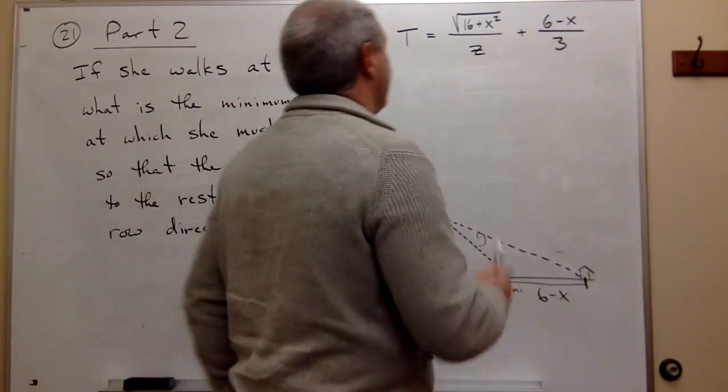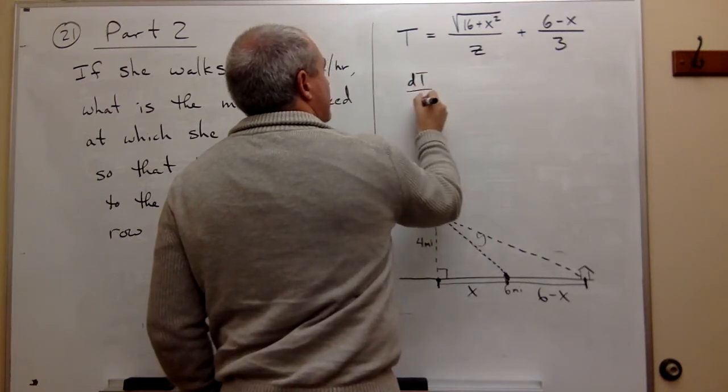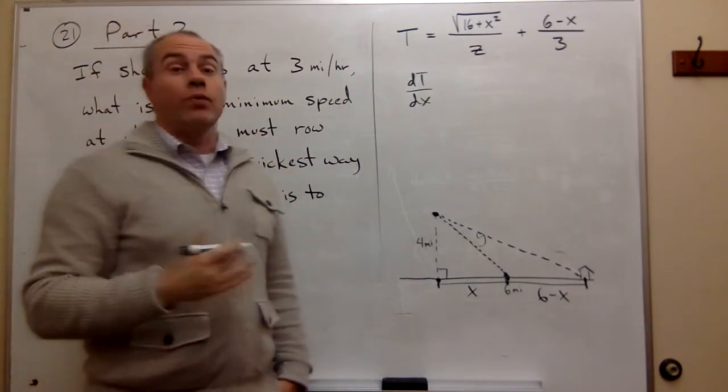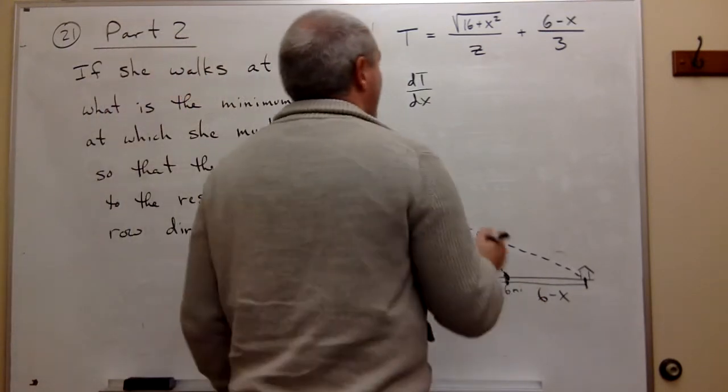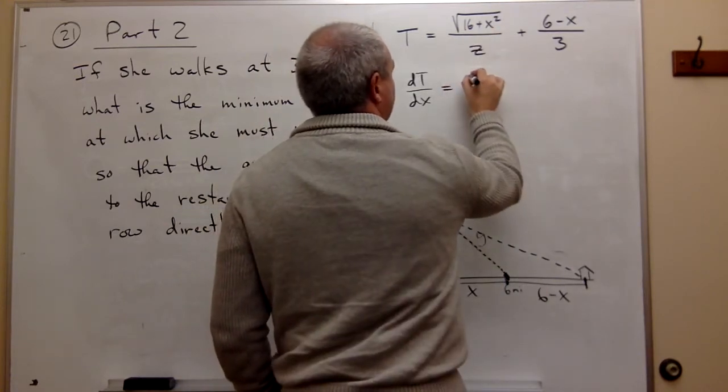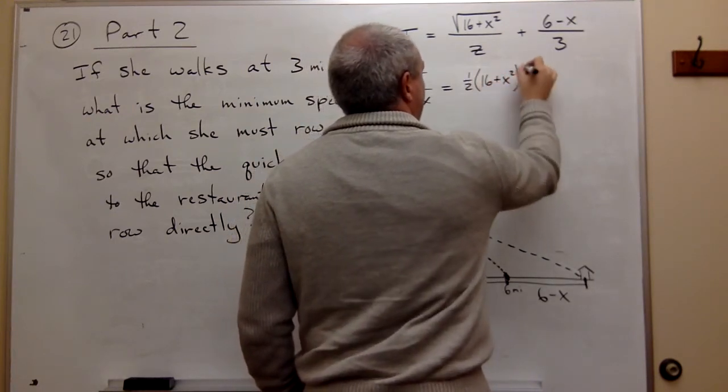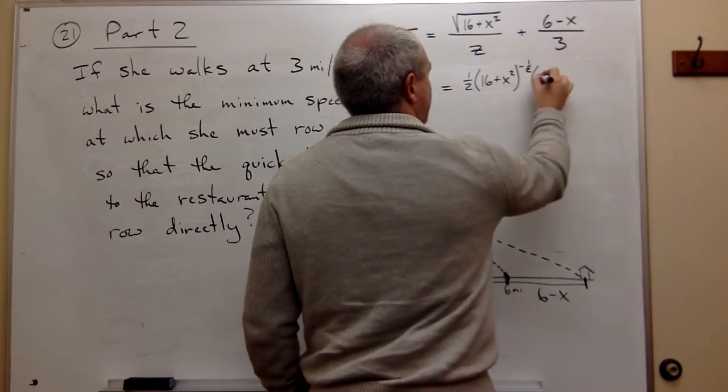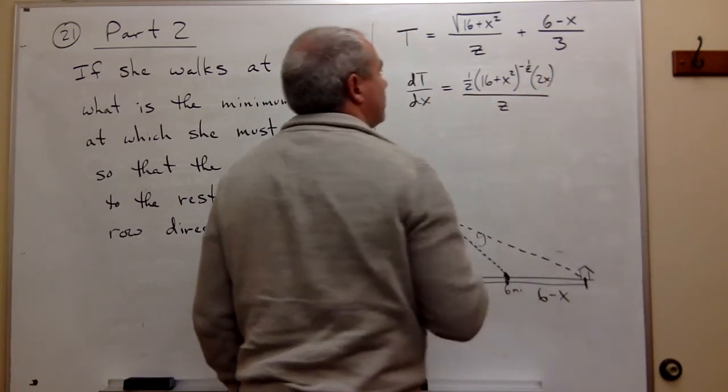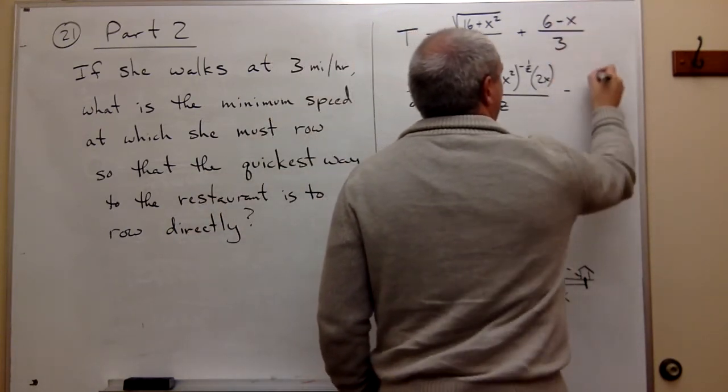So I'm not going to plug in information until I've taken the derivative. So let's take a derivative of this thing. I'm going to call this dt/dx—x is the thing that's changing here, not z, we just don't know what z is. I take the derivative and I get that this is one half of (16 + x²) to the negative one half, times the derivative of what's inside, which is 2x, all divided by z. And then over here, the derivative of (6 - x)/3 is minus one third.